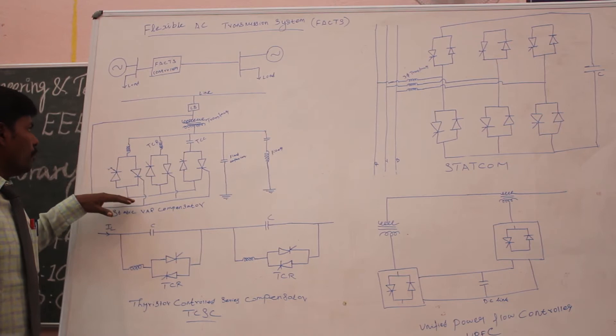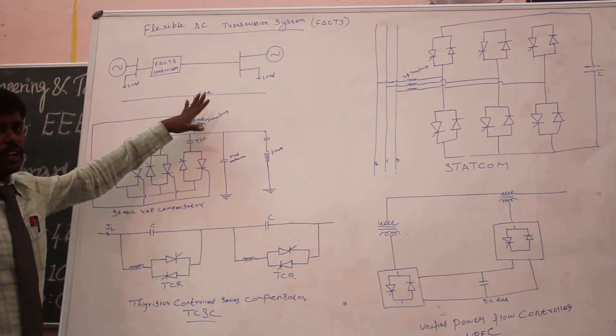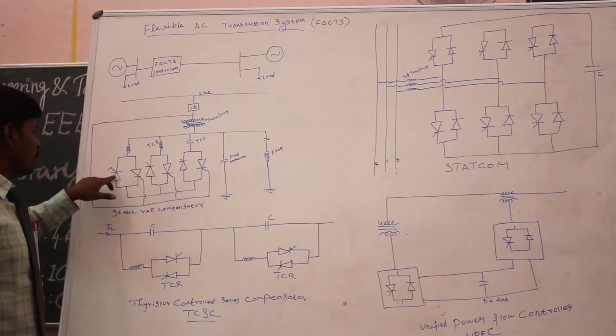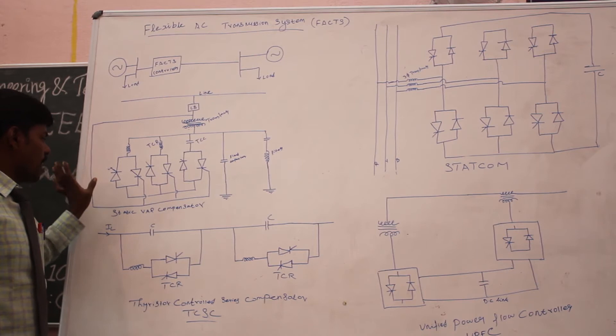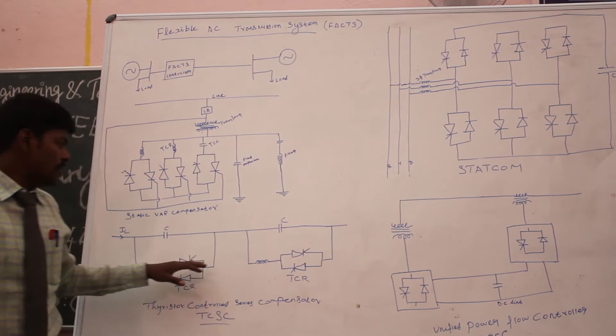Whenever the system is in transient, it automatically provides voltage regulation. We take feedback from the thyristor switching. This is a static device called the static power compensator. Next, we move to the thyristor controlled series compensator. This thyristor series compensator is a series controller.